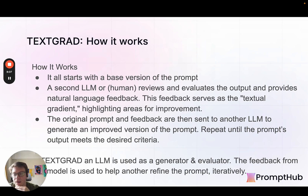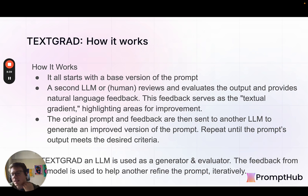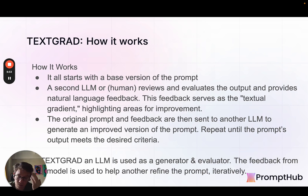Another very popular open source repository is TextGrad, which is relatively new. I like to think of it as a descendant or improvement on DSPy. The focus here is less on quantitative scoring and more on textual gradients — natural language feedback — whereas DSPy is more quantitative. You start with a base version of the prompt, and then a second LLM or human reviews some outputs and gives natural language feedback. This feedback is the textual gradient, highlighting areas for improvement. The original prompt and feedback are then sent to another LLM to generate an improved version. This keeps going until the user decides the process is done. We have templates for each one of these steps laid out in the blog post below.